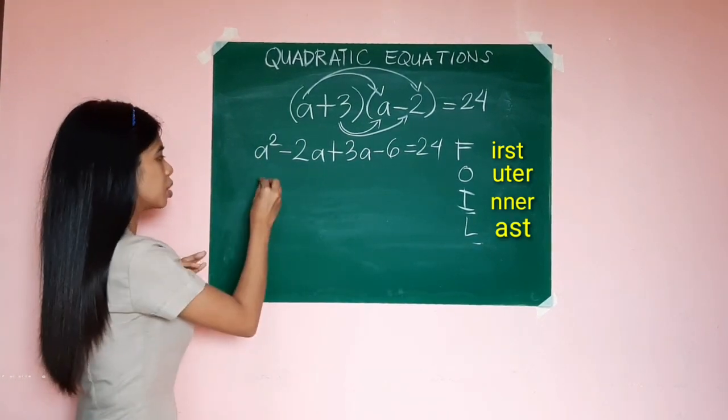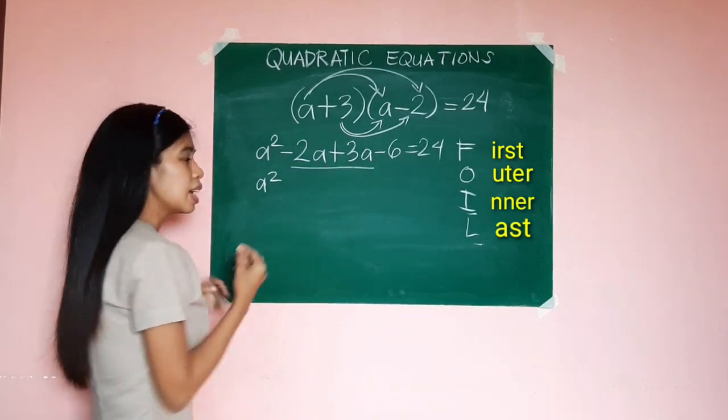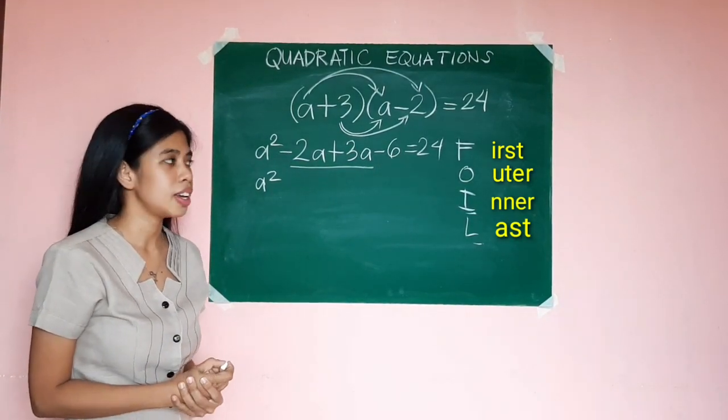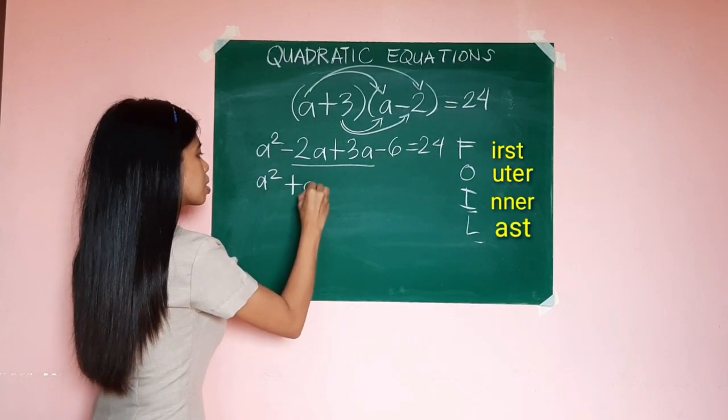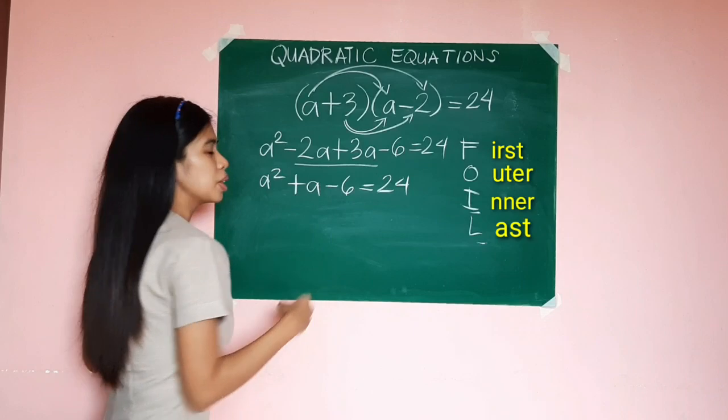Simplifying this expression, it would give us a² - 2a + 3a is positive a, minus 6 equals 24.